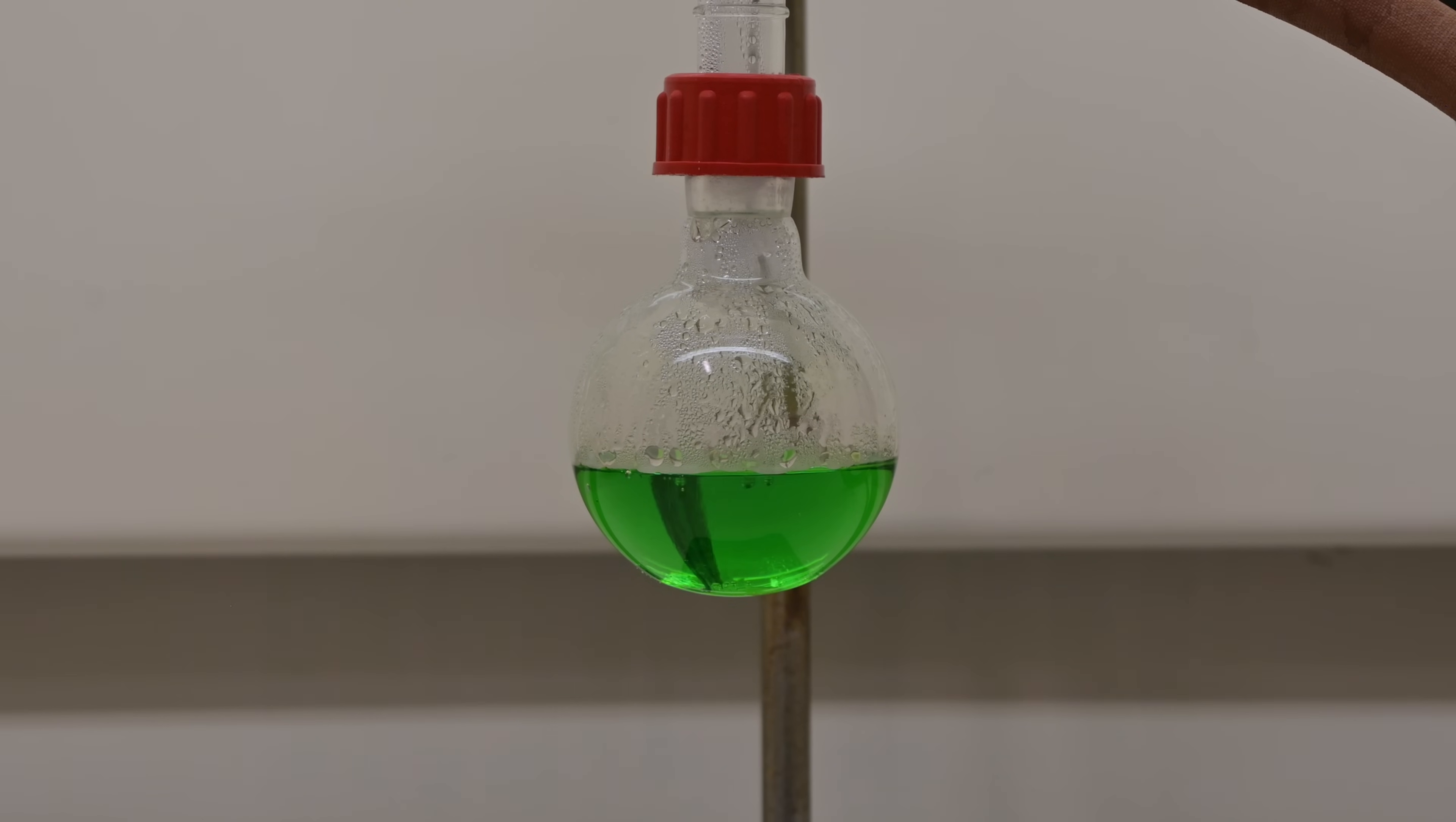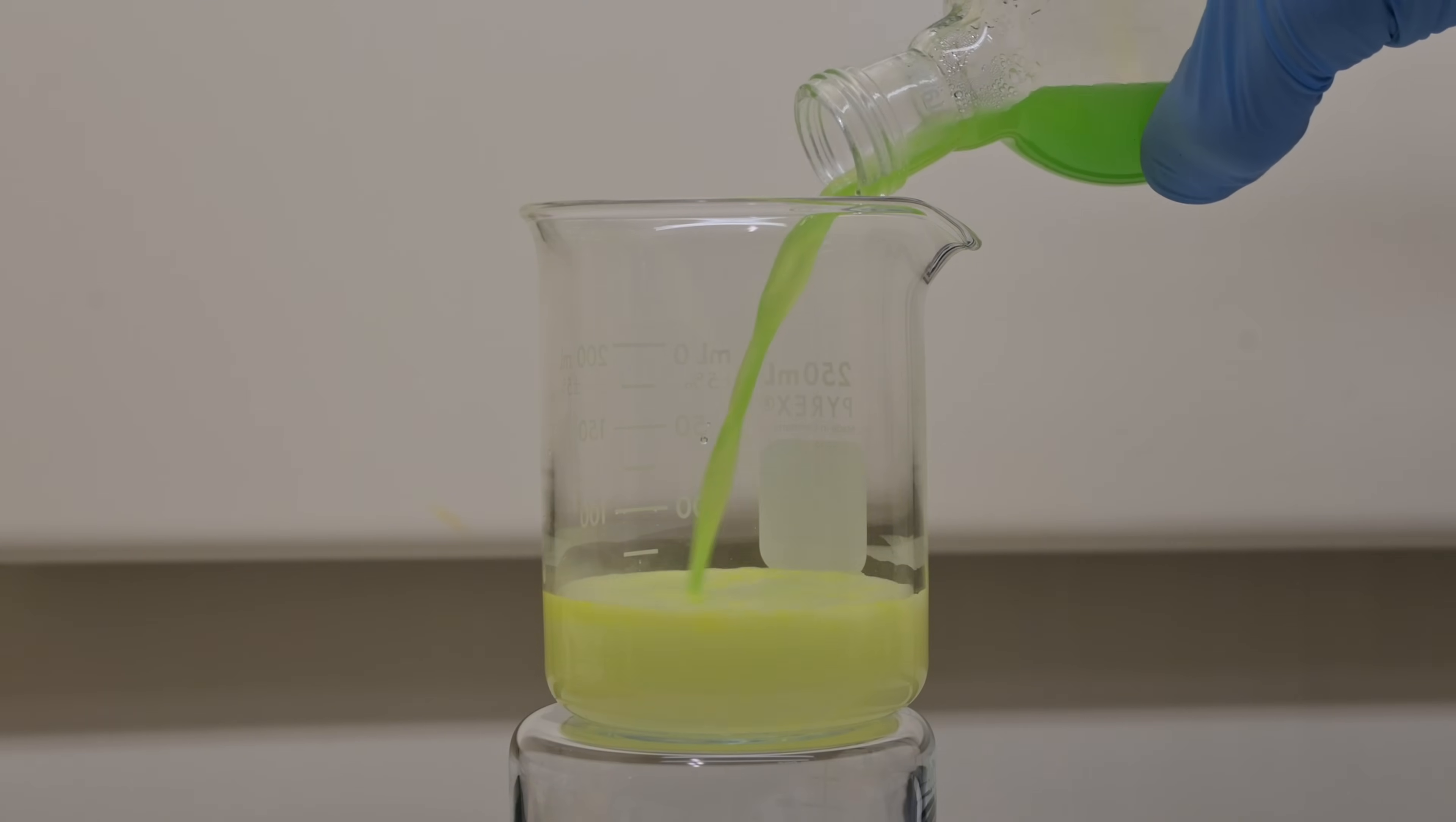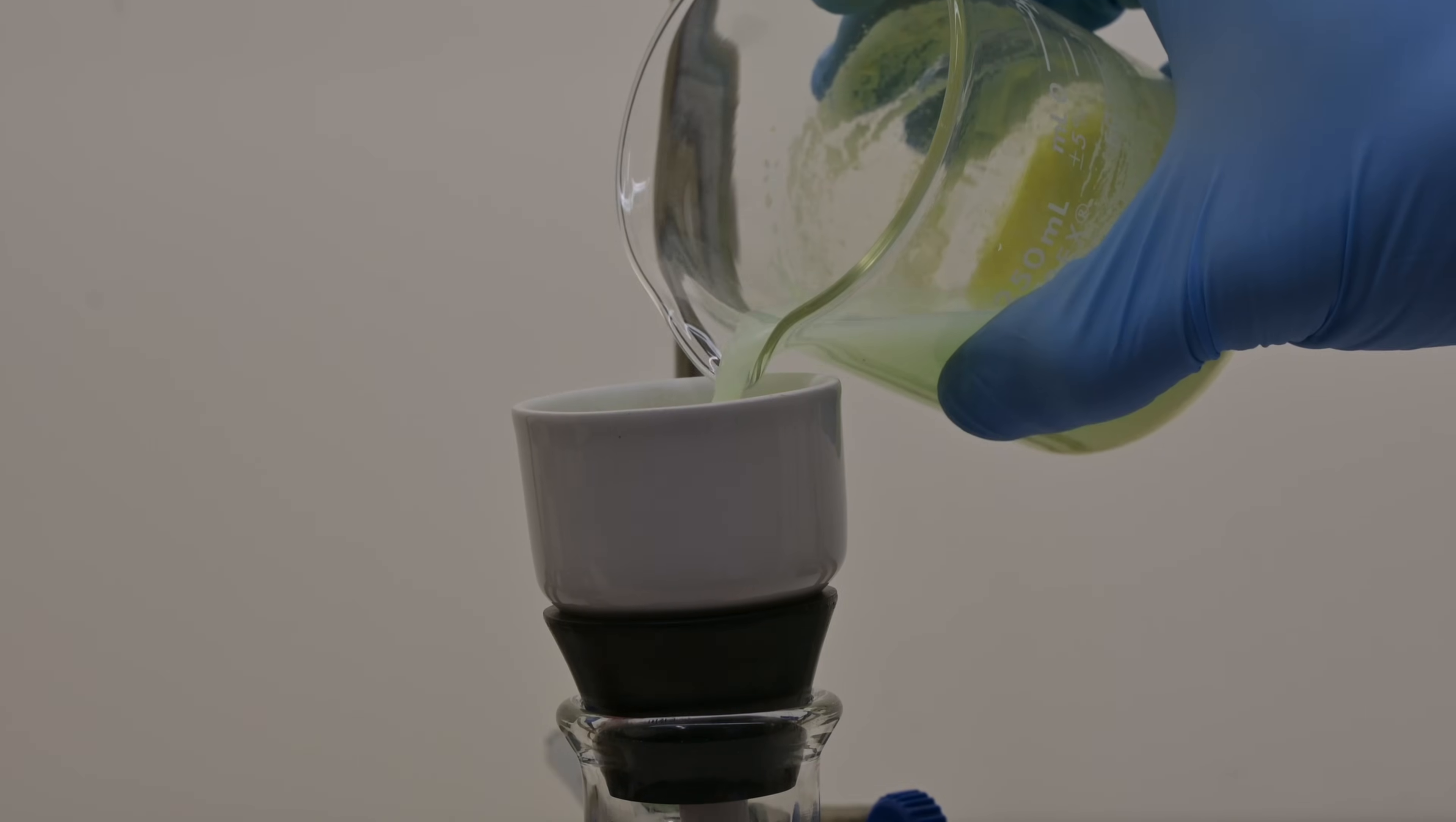After the reaction is complete, we turn off the heating and allow the mixture to cool slightly, ideally to around 50-60 degrees Celsius. Now we pour this warm green solution carefully into 40 milliliters of ice cold water while continuously stirring. This sudden cooling will cause the benzil to crystallize beautifully into vivid yellow crystals, separating from aqueous solution.